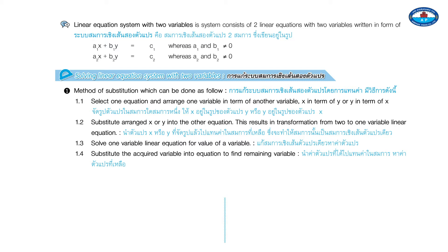Step 2: Substitute the arranged x or y into the other equation. This results in a transformation from a two-variable to a one-variable linear equation. Step 3: Solve the one-variable linear equation for the value of that variable. Step 4: Substitute the acquired variable back into an equation to find the remaining variable.